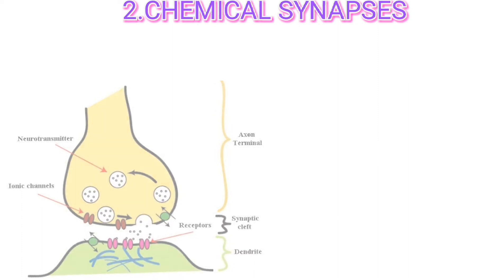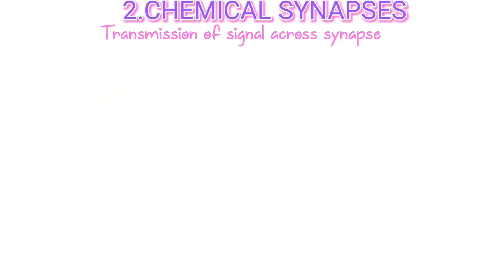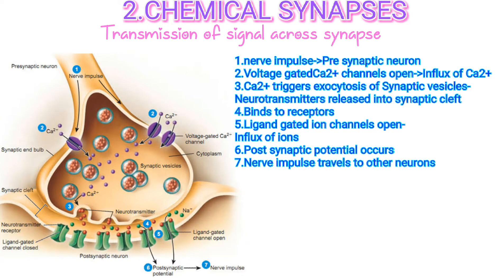Now let us see the transmission of a signal across a chemical synapse. First, the nerve impulse reaches the pre-synaptic neuron, and this impulse causes the opening of voltage-gated calcium channels. Ca2+ flows inwards, and the concentration of calcium ions increases in the pre-synaptic end. In the pre-synaptic end, there are many synaptic vesicles in which the neurotransmitters are stored. The calcium ions trigger the exocytosis of the synaptic vesicles, and hence the neurotransmitter is released into the synaptic cleft.